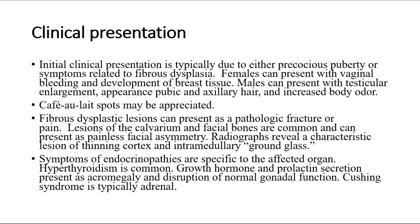Symptoms of endocrinopathies are specific to the affected organ. Hyperthyroidism is common. Growth hormone and prolactin secretion present as acromegaly and disruption of normal gonadal function. Cushing syndrome is typically adrenal in origin.